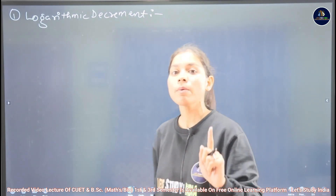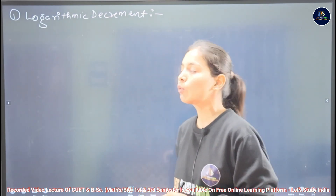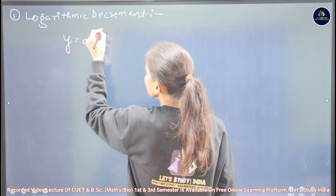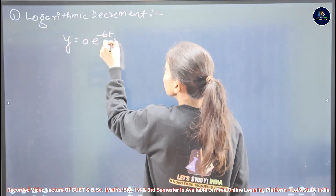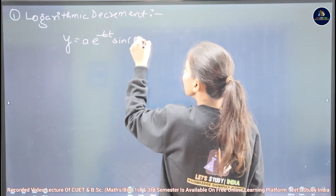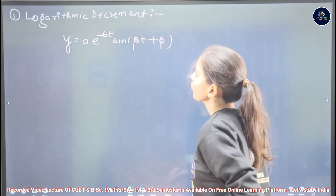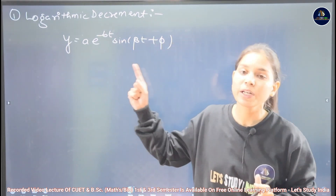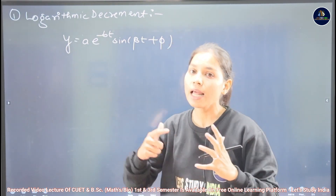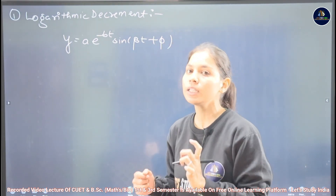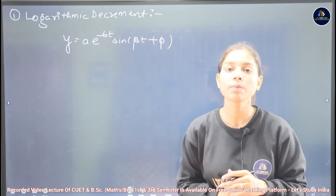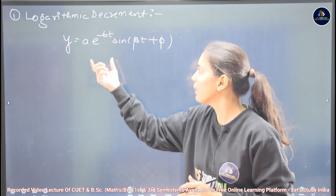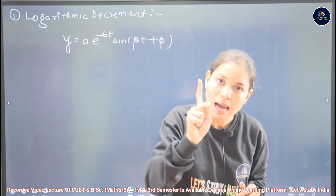If we talk about the damping oscillator system, the displacement equation we have is: y = A·e^(-bt)·sin(βt + φ). This is our damping oscillator displacement under the under-damping case, where A·e^(-bt) is our decaying amplitude.